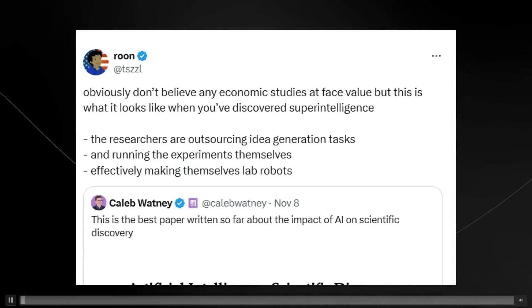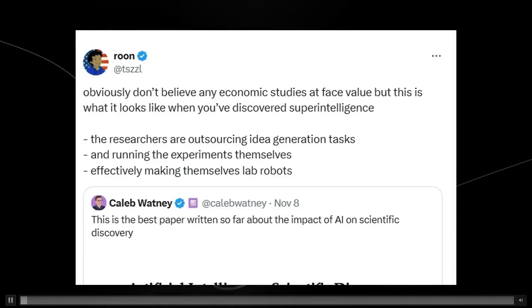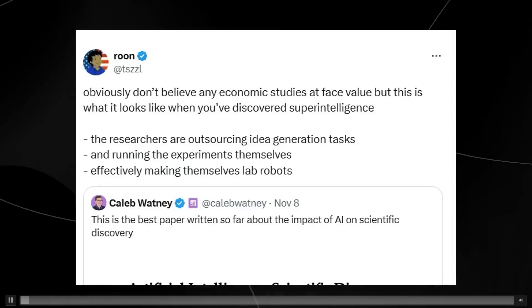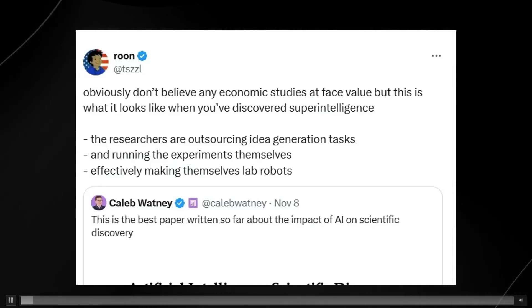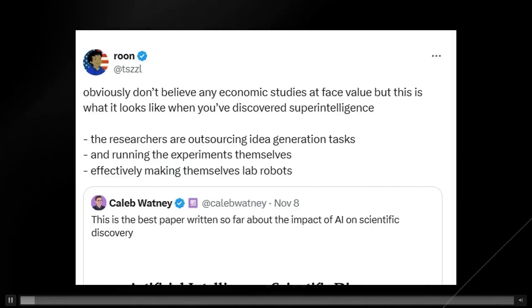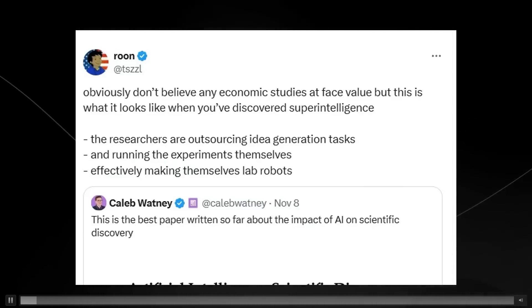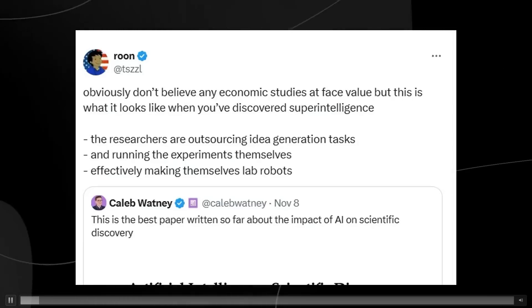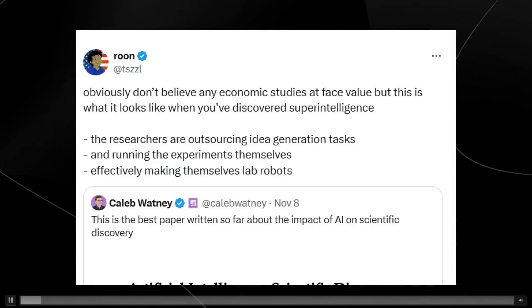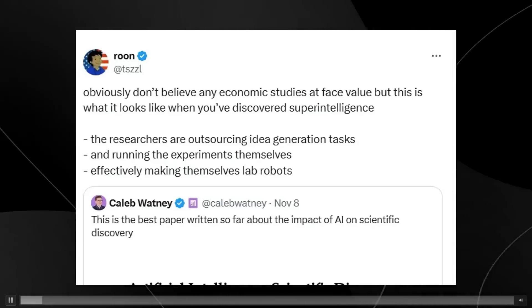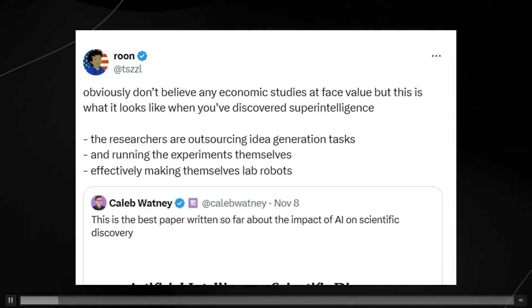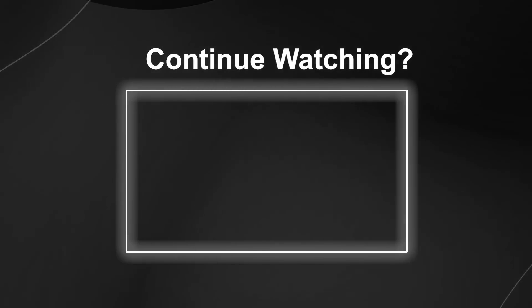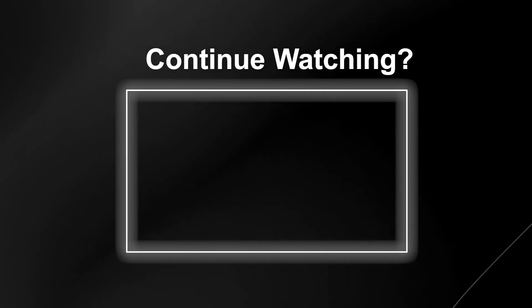We also get to see comments from Rune. Honestly, I don't know who Rune is. There is some speculation that he's an OpenAI employee. But he basically said, don't believe any economic studies at face value. But this is what it looks like when you've discovered superintelligence. The researchers are outsourcing idea generation tasks and running the experiments themselves, effectively making themselves lab robots. This is just a provocative interpretation of the MIT study we just looked at. This kind of shows us an early indicator of superintelligence. While yes, there is a crazy statement, this is essentially what superintelligence will be used for. It's not going to be used to do your taxes or write essays or even create movies. It's going to be used for scientific discovery.